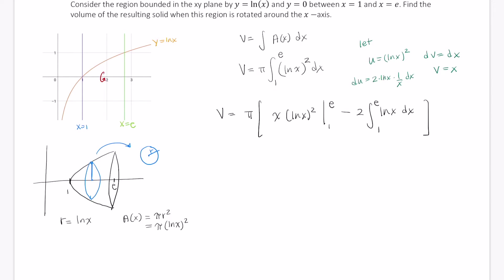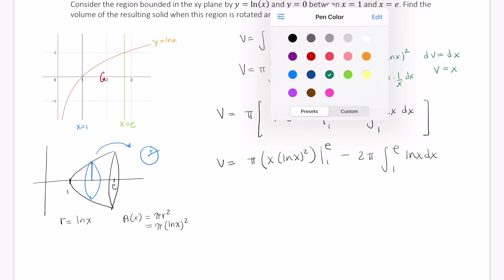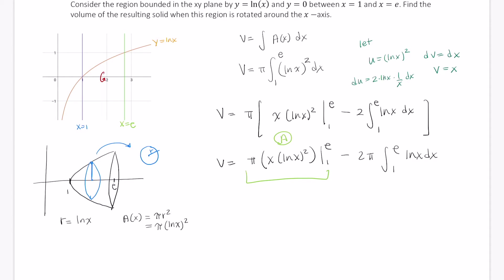Now I'm going to rewrite this into two separate problems. That is, I'm going to write this as π times x ln of x quantity squared, evaluated from 1 to e, minus 2π times the integral from 1 to e of ln of x dx. Now if you're wondering why I'm doing that, that's because I want to solve this part, which I'm going to call A, and this portion, which I'm going to call B, separately. That tells me that the volume is just going to equal A minus B.